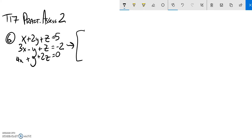So I'm going to rewrite it as a matrix. 1x, 2y, 1z, and a 5. 3x, negative 1y, 1z, and a negative 2. 4, 1, 2, 0.